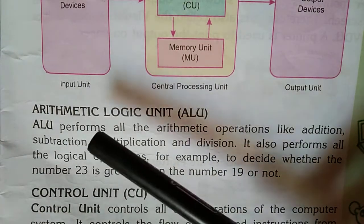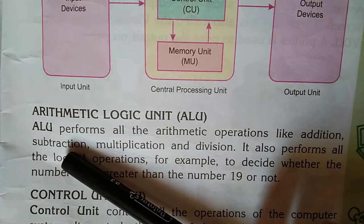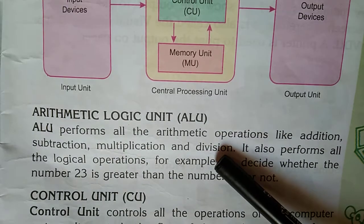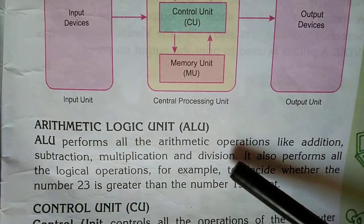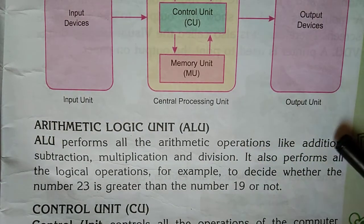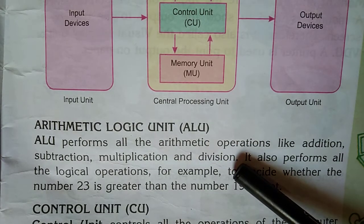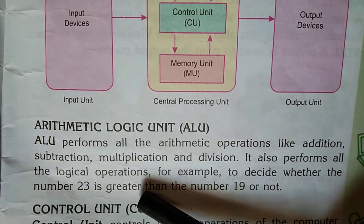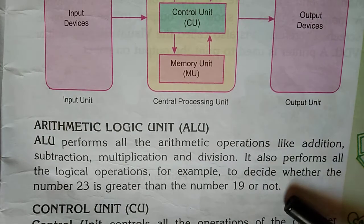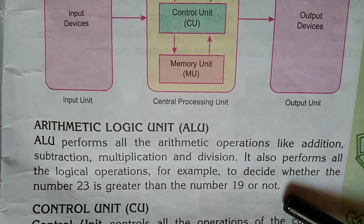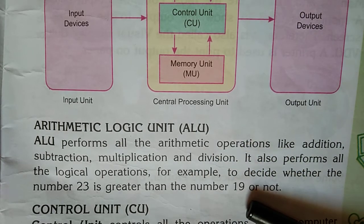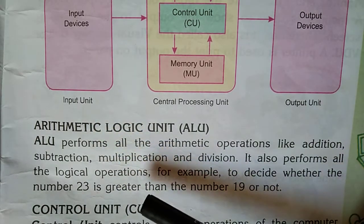The first part of the CPU is the Arithmetic Logic Unit — ALU. It has two functions: arithmetic and logic. Arithmetic operations are plus, minus, multiply, and divide. It also performs all logical operations — for example, deciding whether the number 23 is greater than 19 or not. When the computer has to compare two values — greater than, less than, equal, or not equal — that is a logical operation.